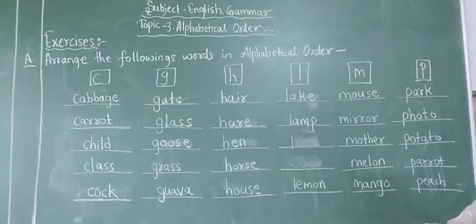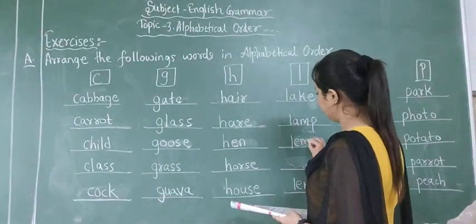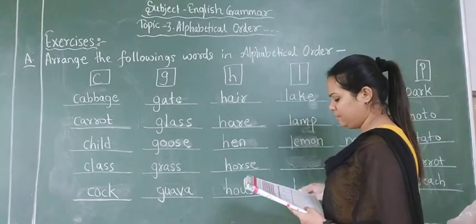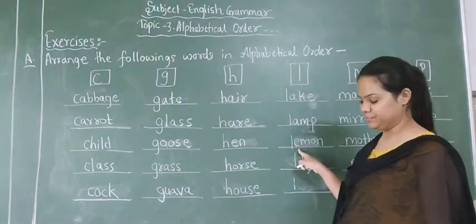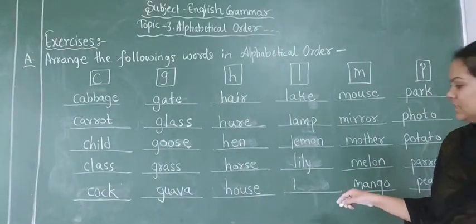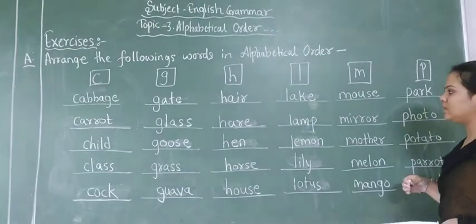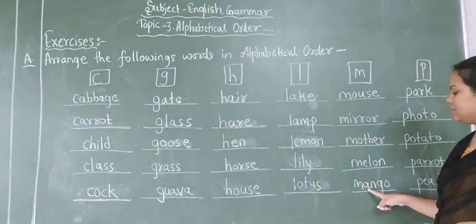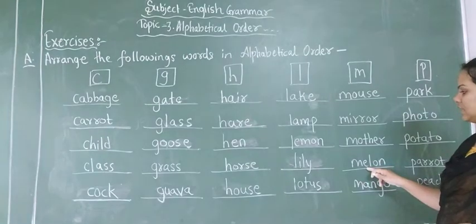Then we have lemon. Then we have lily. Because L-A ke baad L-E wala, after that L-I wala, and the last one that is L which is there, that is L-O-T-U-S lotus. In this way we have arranged L letter words.